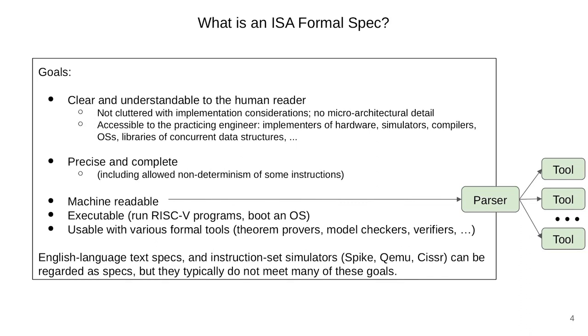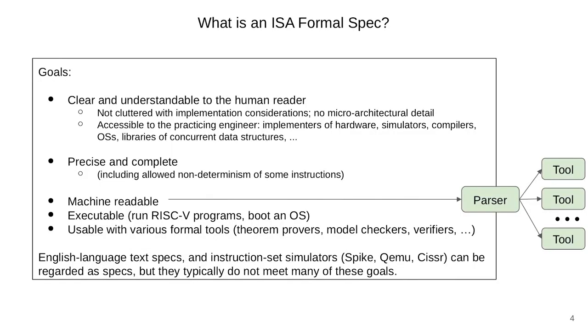It does have to be machine-readable, so there needs to be a parser that can take it to a tool chain that could potentially prove correctness. Being executable is definitely one approach as opposed to being axiomatic — the particular specification I'm going to show is an executable specification, meaning you can actually run RISC-V programs on it rather than just defining correctness properties. And finally, it has to be usable with various formal tools: theorem provers, model checkers, verifiers. An English language spec usually doesn't meet these requirements, and existing simulators like Spike or Scissor rarely meet all the requirements of an ISA formal spec.